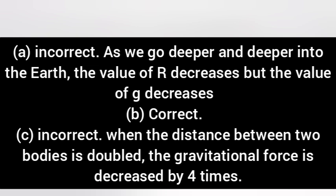B: Correct. C: Incorrect. When the distance between two bodies is double, the gravitational force is decreased by 4 times or 1 by 4.